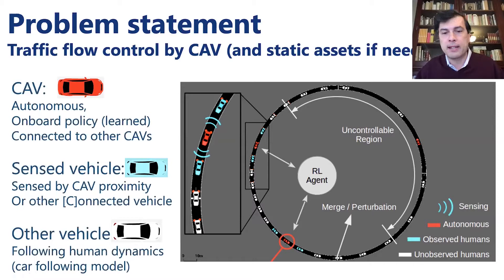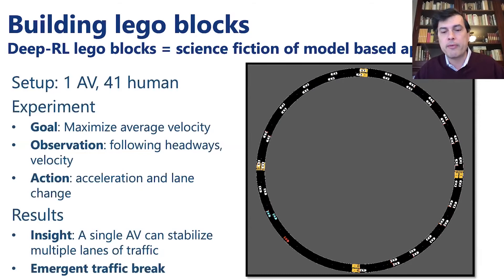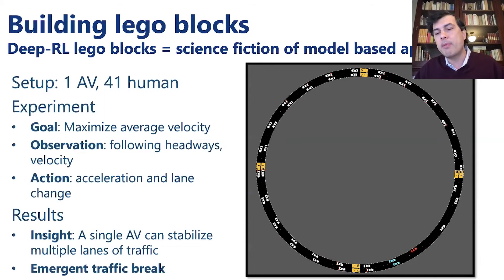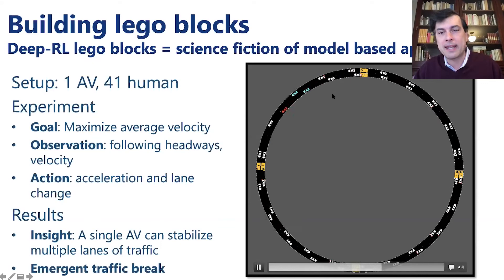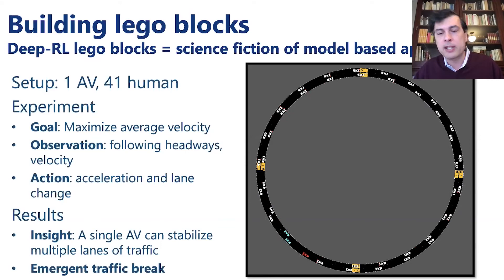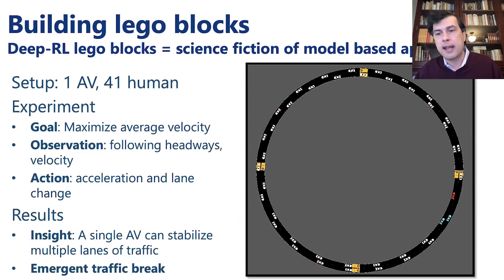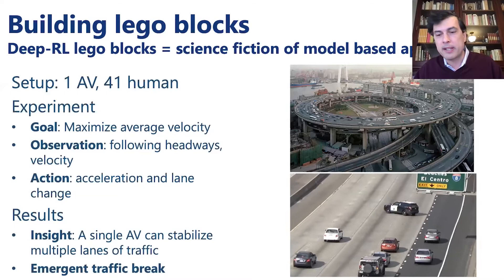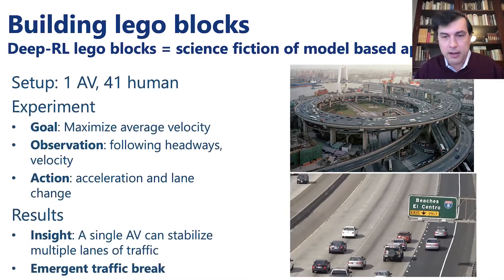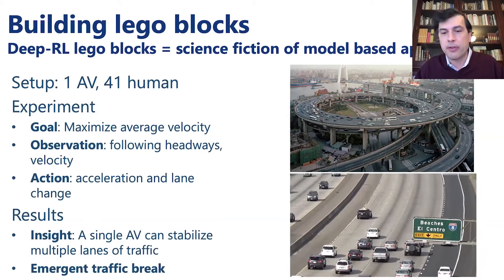The first thing we tried was replicating the single-ring result with two rings. What the car does is switch lanes back and forth, essentially preventing the cars behind from passing it, thereby stabilizing two rings. The interesting part is that lane changing normally leads to NP-hard problems in optimal control due to the Boolean variable involved. Here, the algorithm just figured it out — an emergent behavior that was really encouraging.